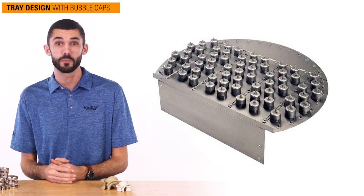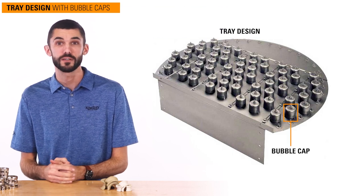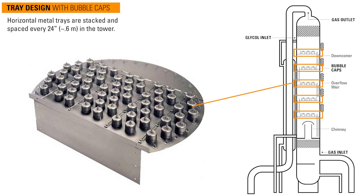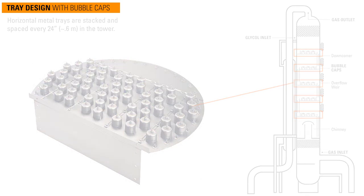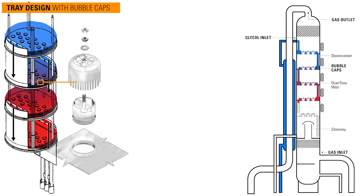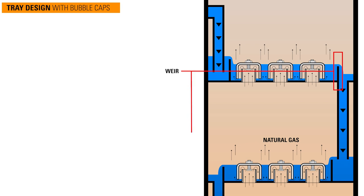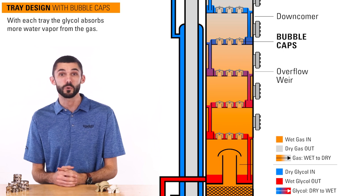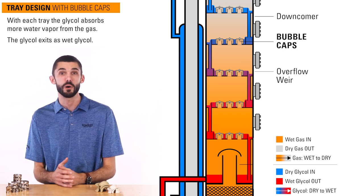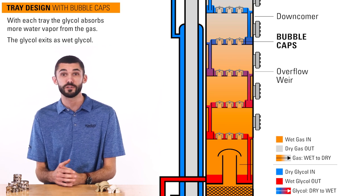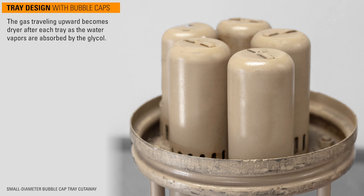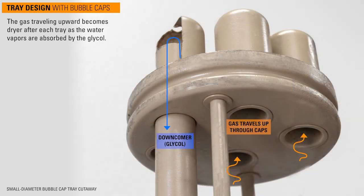The third and most common type of absorber tower is a tray design with bubble caps. In this design, horizontal metal trays are stacked and spaced every 24 inches in the tower. Dry glycol enters the tower at the top and pours over the bubble caps. The gas moves up from under them and seeps through the holes in the caps. A level of glycol is held on each tray by a weir before it travels through a downcomer to the next tray. With each tray, the glycol absorbs more water vapor from the gas. When the glycol exits the bottom of the tower, it is saturated with water and referred to as wet glycol. The gas traveling upward becomes drier after each tray as the water vapors are absorbed by the glycol.